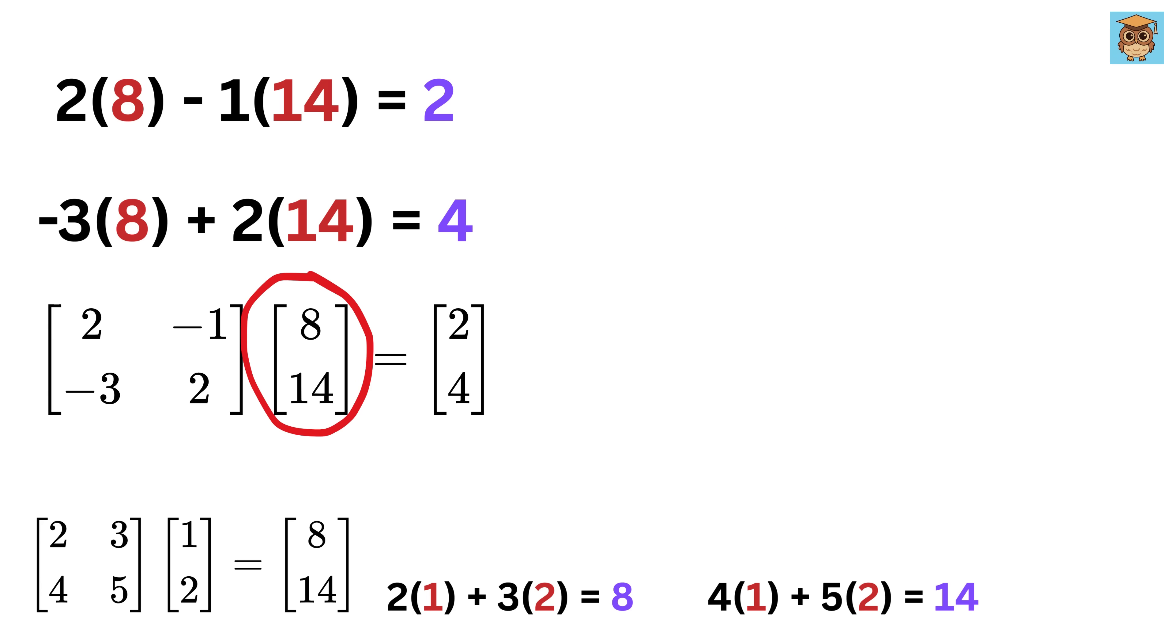If you remember, this 8 and 14 is not a random vector that we chose, but it was actually the result of our first transformation. Remember how we started with the vector 1 and 2, then used a matrix to transform it into 8 and 14? Now, we just took that transformed vector and applied another transformation using a different matrix, and we got a new vector 2 and 4.